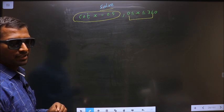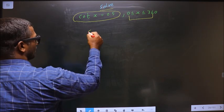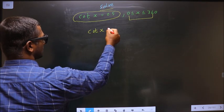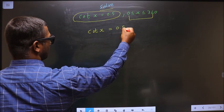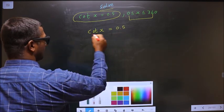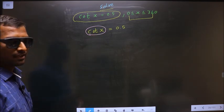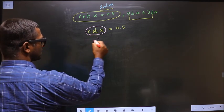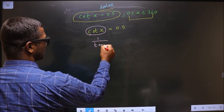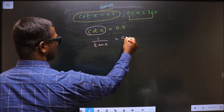First, the given equation is cot x equals 0.5. Here you have cot. Change that to tan. So cot x is nothing but 1 by tan x equals 0.5.